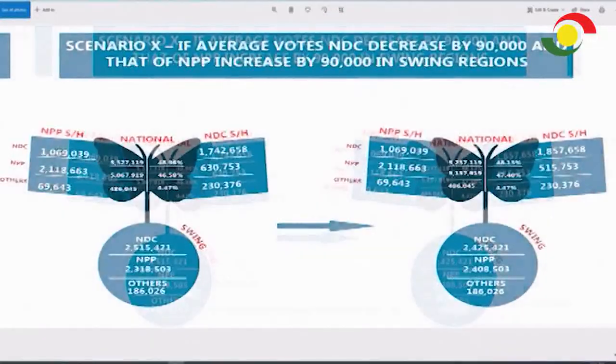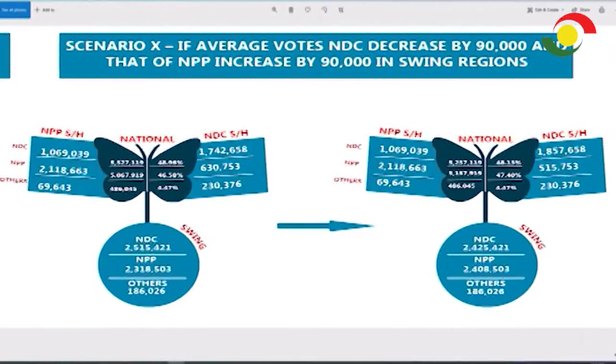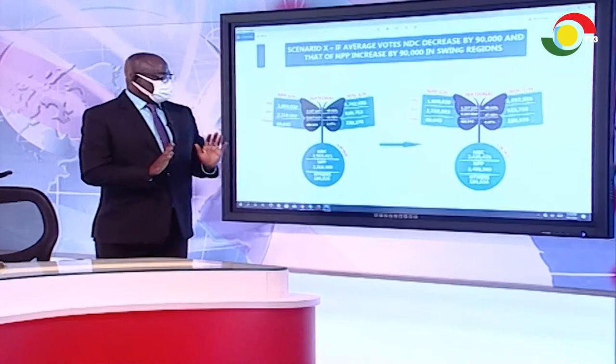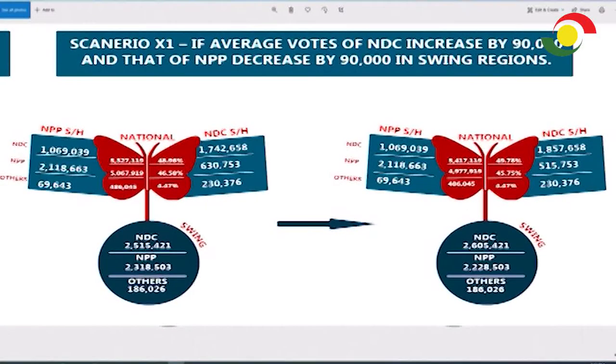Scenario ten: NDC's average vote decreases by 90,000 and NPP increases by 90,000 in swing regions — NDC drops to 48.13% nationally and NPP increases to 47.40% nationally, but it still doesn't produce an outright win. Scenario eleven: NDC increases by 90,000 and NPP decreases by 90,000 — it still doesn't produce a win. The dynamics to win get complicated and complex; you need a combination of these factors. For viewers just joining, these are the scenarios for swing regions — the stronghold scenarios have been exhausted.